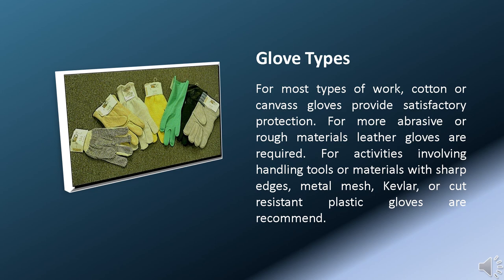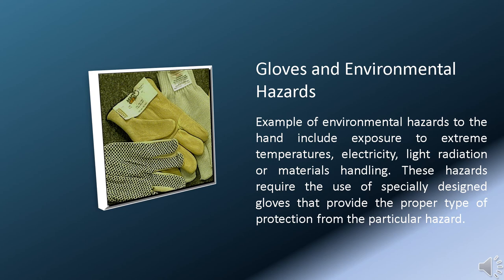For activities involving handling tools or materials with sharp edges, metal mesh, Kevlar, or cut-resistant plastic gloves are recommended. Examples of environmental hazards to the hand include exposure to extreme temperatures, electricity, light radiation, or materials handling. These hazards require specially designed gloves that provide the proper type of protection. For instance, special rubber gloves or insulating lineman's gloves are designed to protect and insulate against electrical shock. Leather can be used to protect against light radiation. Insulated gloves made of specialized insulating materials are required for protection against temperature extremes.